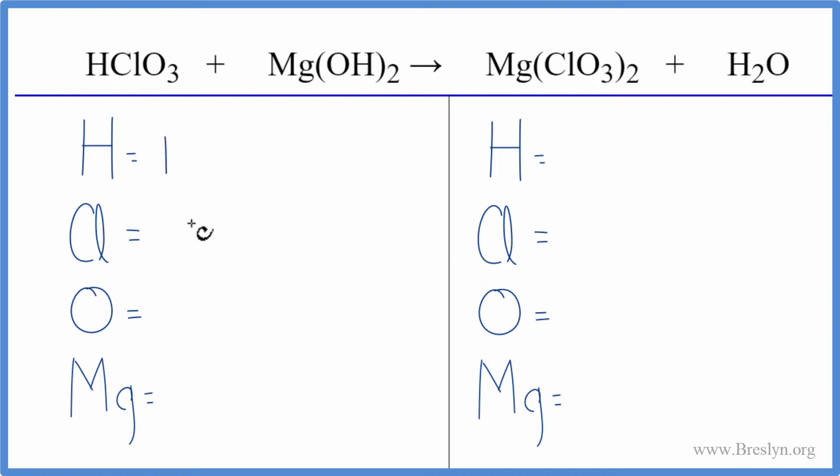We have one hydrogen, plus then we have two times the one here. We have two hydrogens there, so three total hydrogen atoms.